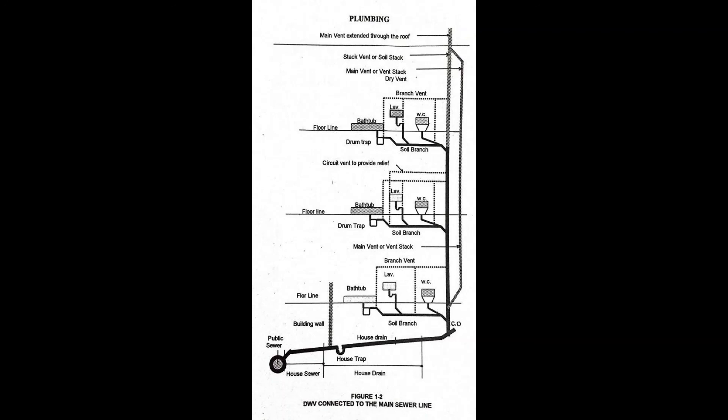Vent system is a pipe or pipes installed to provide a flow or circulation of air within the plumbing system to protect trap seals from siphoning and back pressure.